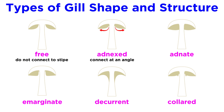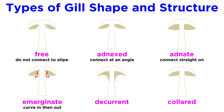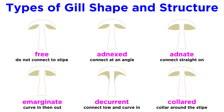Adnexed gills connect at the top of the stipe at an angle and curve outward. Adnate gills connect to the stipe at around a 90-degree angle and have little curvature. Imarginate gills connect to the stipe at an angle, curve inward, and then curve outward. Decurrent gills connect low on the stipe at an angle and curve inward. Collared gills do not connect to the stipe but form a collar that surrounds it.